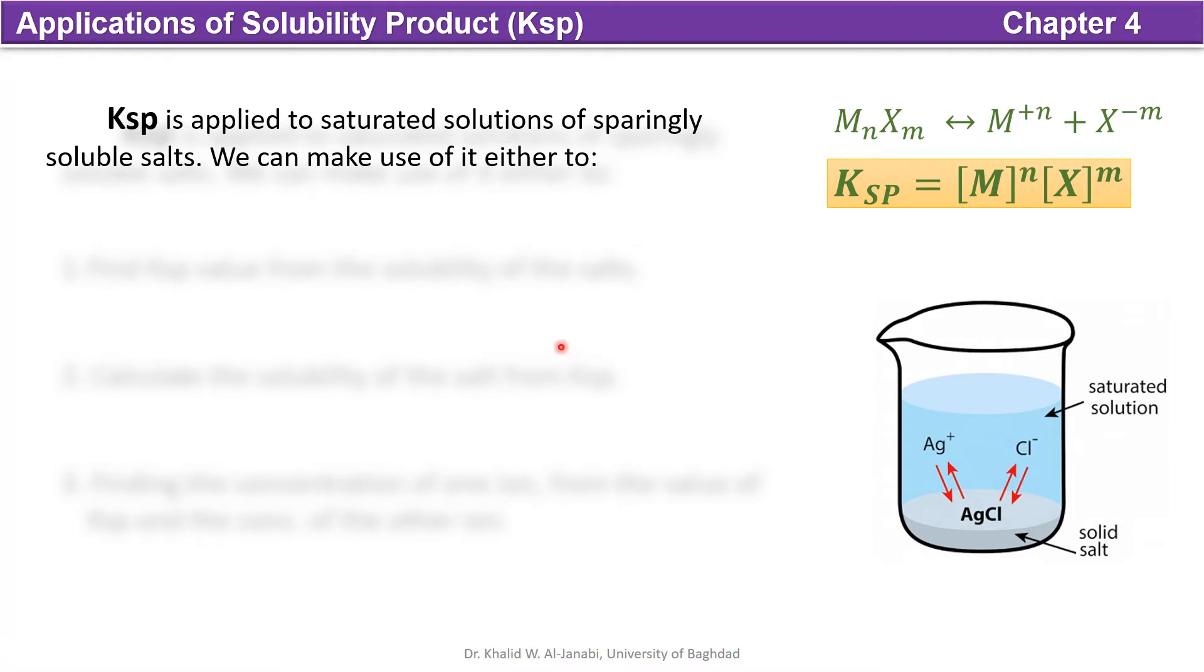Here we can see the general equation to calculate Ksp. Ksp equals the multiplication of the concentration of the soluble ions. We can make use of Ksp either to find the Ksp value from the concentrations of the ions or soluble ions.